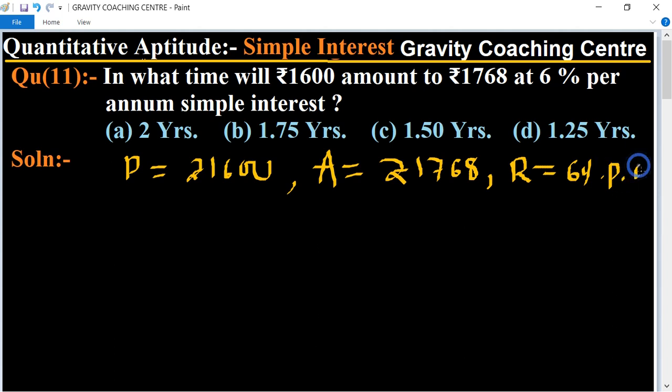We will find the interest. The formula of interest is I = A - P, equals 1768 minus 1600, equals